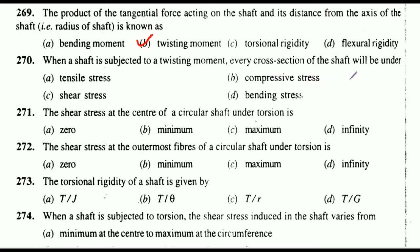When a shaft is subjected to a twisting moment, every cross section of the shaft will be under: tensile stress, compressive stress, shear stress, or bending stress. The correct answer is option C: shear stress. The shear stress at the center of a circular shaft under torsion is: zero, minimum, maximum, or infinite. Correct answer: option A — zero. The shear stress at the outermost fiber is: correct answer option C — maximum.